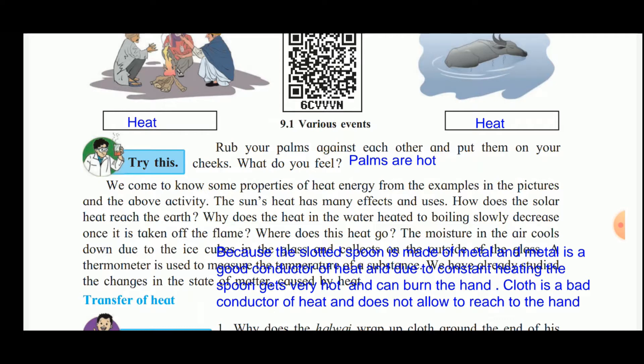From these examples and the activity, we come to know some properties of heat energy. The sun's heat also has many effects and uses. Key questions include: how does solar heat reach us? And why does the heat in boiling water slowly decrease once taken off the flame — where does that heat go?